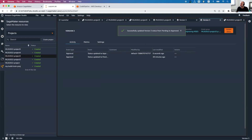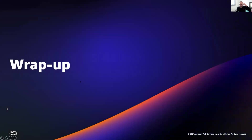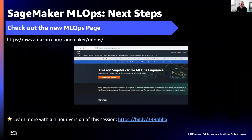As we're almost out of time, I'll stop the demo and get back to the presentation. Wrapping up: you can spin up a whole pipeline including all steps through Projects and its templates in less than half an hour, then iterate and adjust to your workload. You have pipelines for all steps, model registry as a handoff, and through an approval process using CI/CD deployment pipelines you can get the model into production, manage it, and roll back if needed. For more, visit the SageMaker MLOps page, and there's a one-hour version of this session available at the address shown.